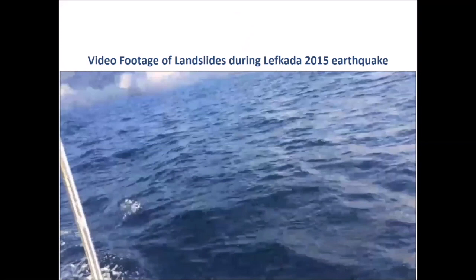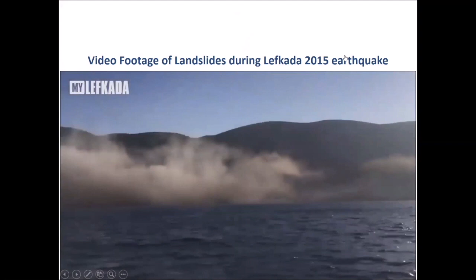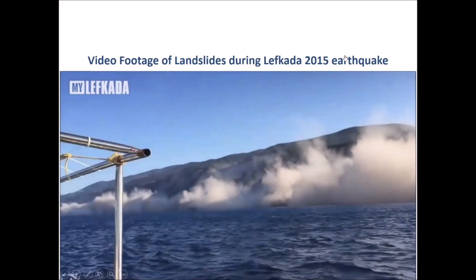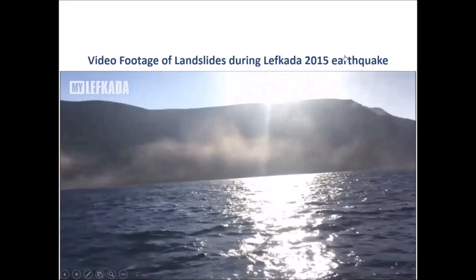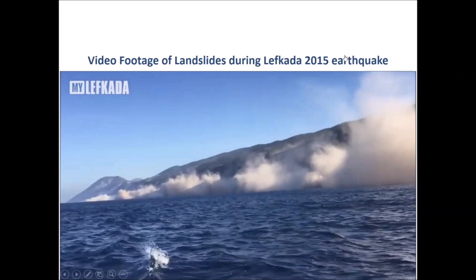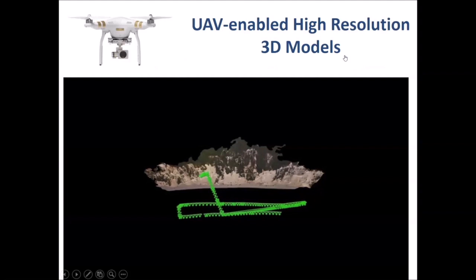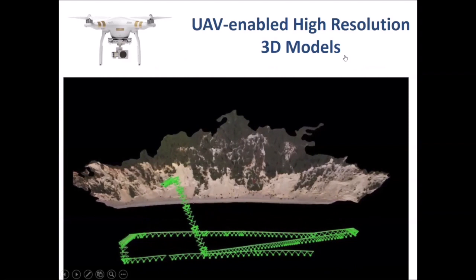We can also deploy unmanned aerial vehicles or drones to create truly high-resolution models of large areas. For example, in 2015, an earthquake in Lefkada, Greece, caused more than 700 landslides along a 20-kilometer stretch of the west coast of the island. This footage was captured by fishermen off the coast during the earthquake and shows hundreds of landslides coming downhill — the footage really resembles a battlefield. Luckily, the earthquake occurred in November and nobody was at the beach; otherwise, hundreds of lives would have perished. We deployed UAVs and created a 3D model of nearly the entire coastline.